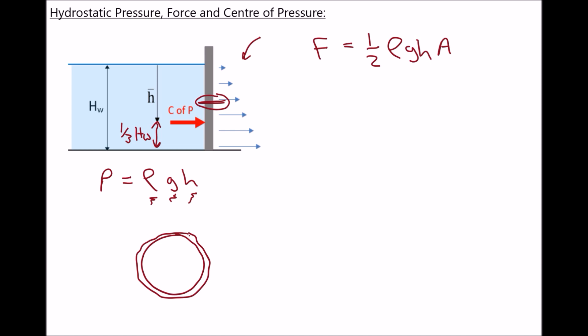By contrast, if we examine the effects of the pressure field above the centre of pressure and compare that with the turning effects of the pressure field below the centre of pressure, then those two turning moments actually balance each other — we have static equilibrium. So the centre of pressure is actually the point where the sum of the pressure fields act, keeping our system in static equilibrium.